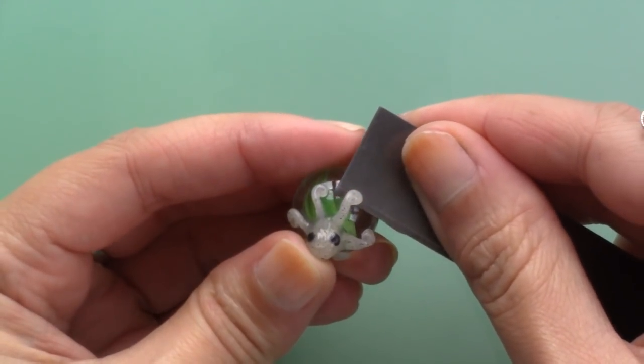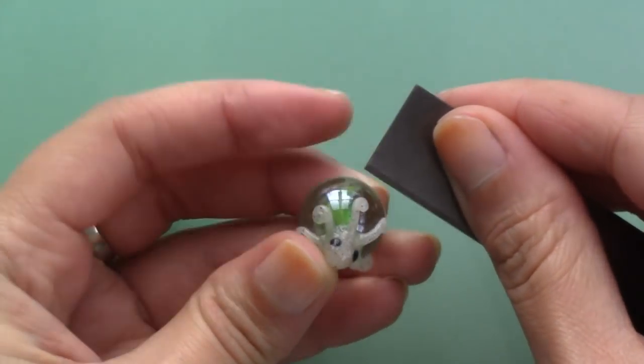To remove it from the marble, gently lift the tentacles with a blade and pry it off.